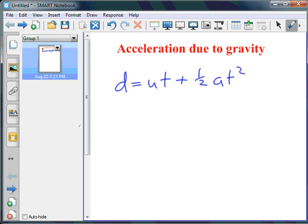Now, when you drop something, and that's probably the simplest example to begin with, U, the initial velocity, is equal to zero, zero meters per second.